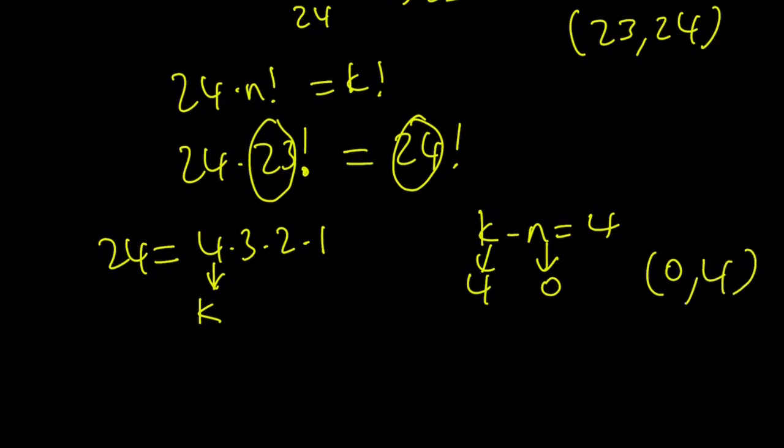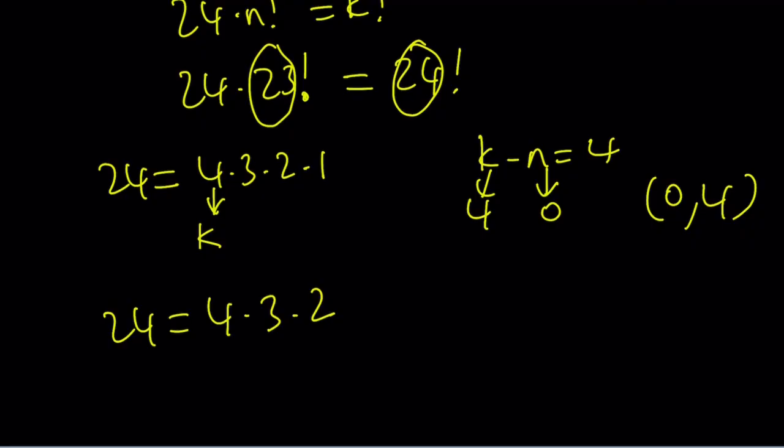Is that the only way to do it? We have another case. Notice that since 24 is 4 times 3 times 2 times 1, it means you can also write it as 4 times 3 times 2. You don't have to include the 1. You can for completeness. But in this case, this gives us another solution. Because the largest number is 4. Again, k is 4, but k minus n is 3 this time because I used 3 numbers. So when k is 4, n is going to be 1. So that gives me 1 comma 4.